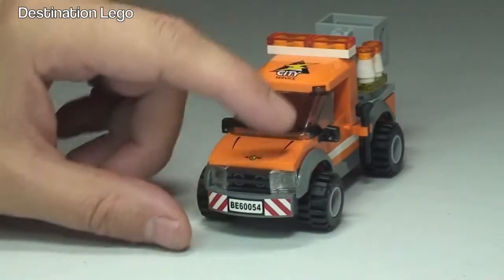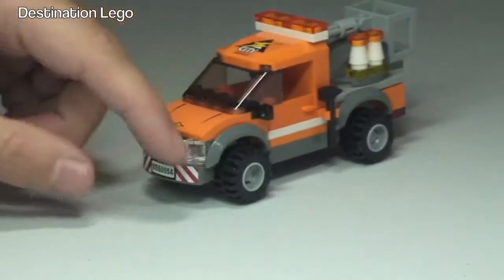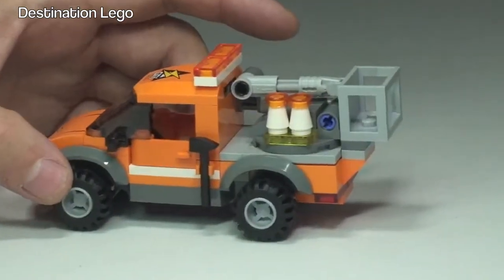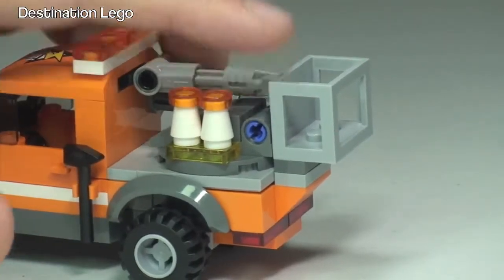We continue round to the side there. It's got these chunky wheels that actually stick out here from the wheel arches. Round on to the rear there where we can actually see the cherry picker there.